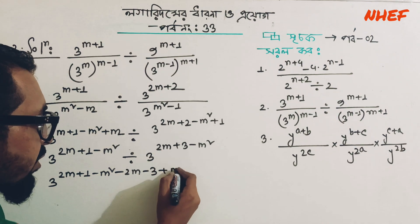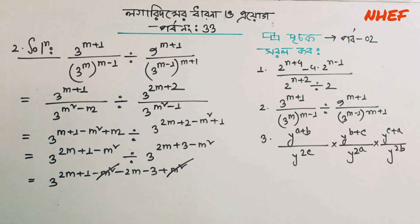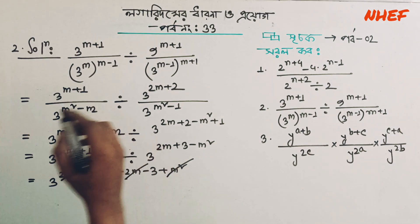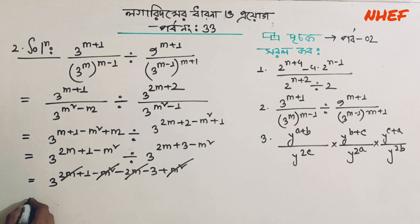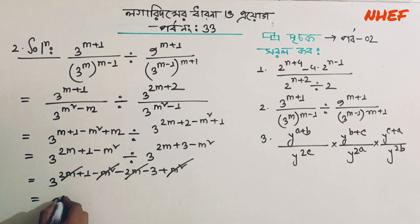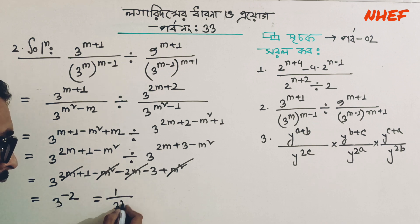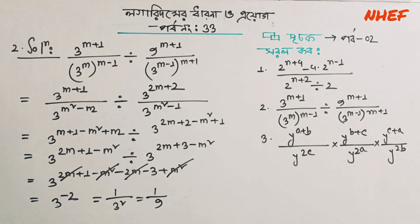Minus m² minus 2m minus 3, plus m². So we can cut out minus m² plus m². What are we going to do now? This will be the first result we read: 3 to the power is 1, 3 equals minus 2. 3 inverse minus 2 is equal to 1 divided by 3 squared, that means 1 divided by 9.